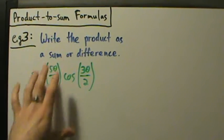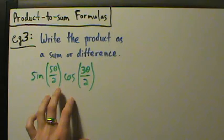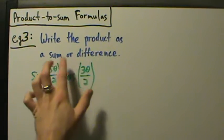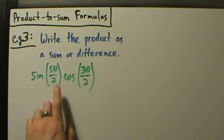Here's example three of using product-to-sum formulas to write a product as a sum or difference. Write the product as a sum or difference, and the product is sine of 5θ over 2 times the cosine of 3θ over 2.